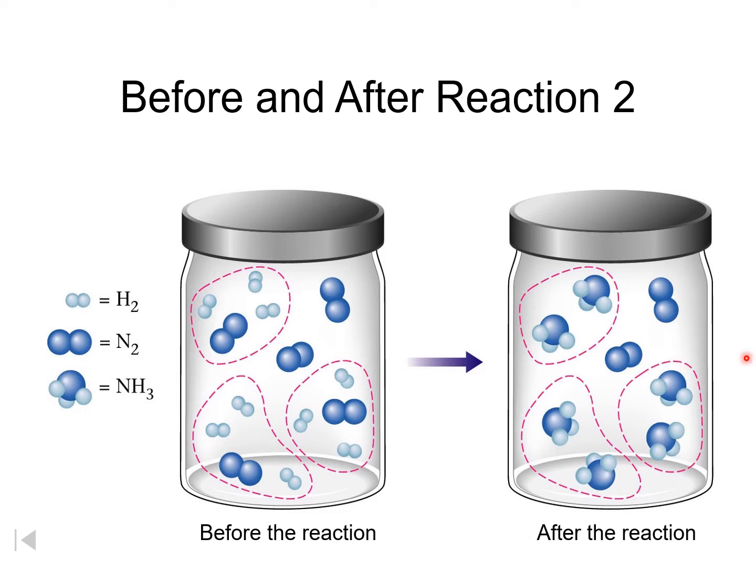This is N2 is the excess reagent. Kasi nagsobra siya, unreacted. And H2 is the limiting reagent. H2 determines the amount of product formed. There are only 6 units of NH3 formed.